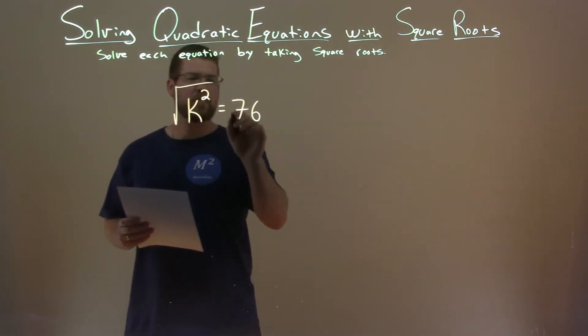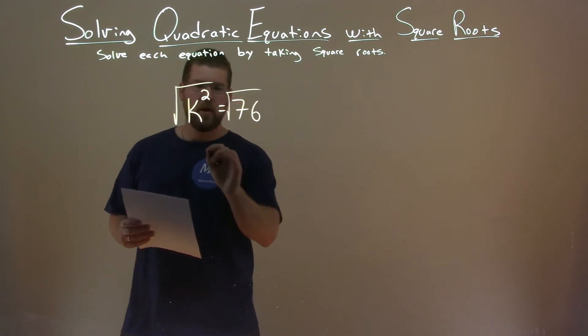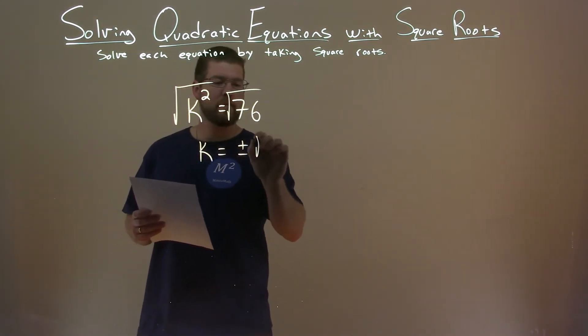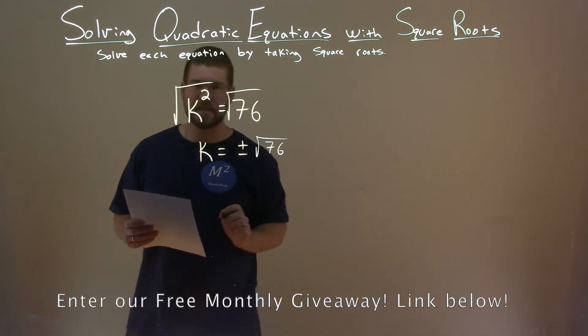So if we take the square root of both sides here, we're left with k by itself equals plus or minus whatever the square root of 76 is.